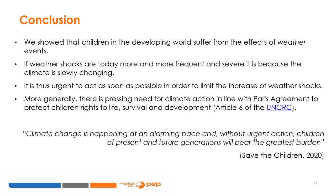But if weather shocks are more and more frequent and also more severe today, it is because the climate is slowly changing, and this tendency is likely to continue to worsen over the coming decades even if we take drastic actions now, given the long lag time before greenhouse gases emitted today leave the atmosphere. We also briefly mentioned the non-economic literature showing that slow-onset climatic events like rising sea levels, melting glaciers, or ocean acidification have a direct negative impact on child well-being. All existing evidence clearly indicates that there is a pressing need for climate action, in line with the Paris Agreement to protect children's rights to life, survival, and development, as stated in Article 6 of the United Nations Convention on the Rights of the Child. We can conclude by quoting Save the Children: 'Climate change is happening at an alarming pace, and without urgent action, children of present and future generations will bear the greatest burden.'